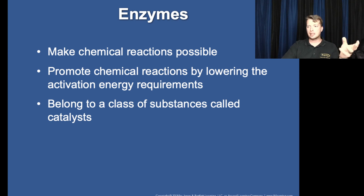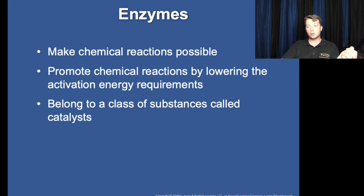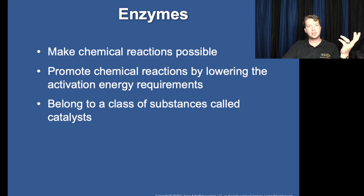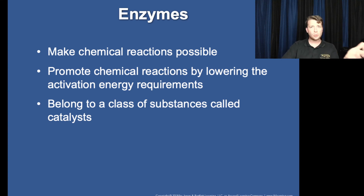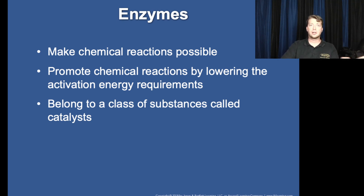Enzymes: big things to remember. They catalyze reactions — they make it easier for the reaction to happen by reducing the energy required. But also super important: enzymes can be denatured because they're a protein. The two things that most commonly denature them in the body are heat and pH. If it becomes too acidic, too basic, too hot, or too cold, they can be denatured. Heavy metals like mercury or lead can do it too. That's why chemical cleaners and alcohol denature the protein structures around bacteria and viruses to destroy them.